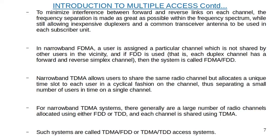In narrowband FDMA, a user is assigned a particular channel not shared by other users in the vicinity. If FDD is used with a forward and reverse simplex channel pair, the system is called FDMA/FDD. In narrowband TDMA, users share the same radio channel but each is allocated a unique time slot in a cyclical fashion. For narrowband TDMA systems there are generally a large number of radio channels allocated using either FDD or TDD, and each channel is shared using TDMA — such systems are called TDMA/FDD or TDMA/TDD.